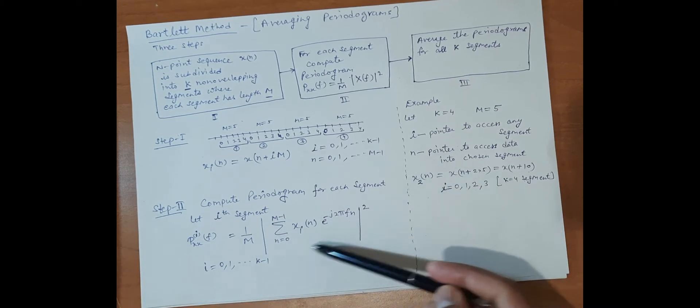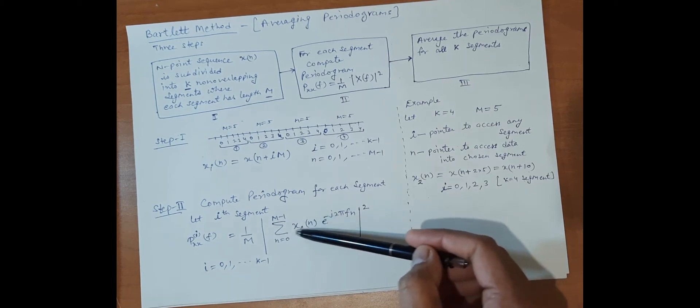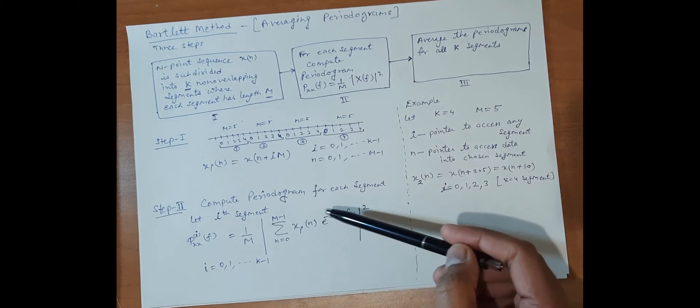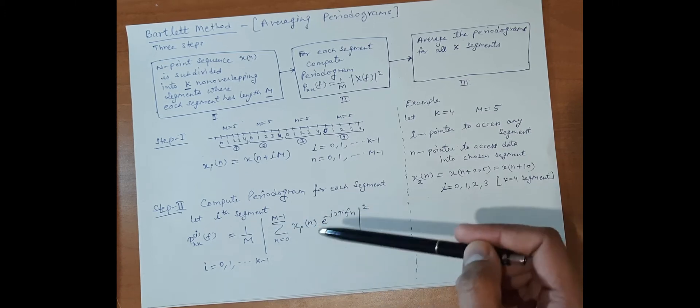It is the Fourier transform of x(n), specifically x_i(n) for that ith case, and the Fourier transform squared.